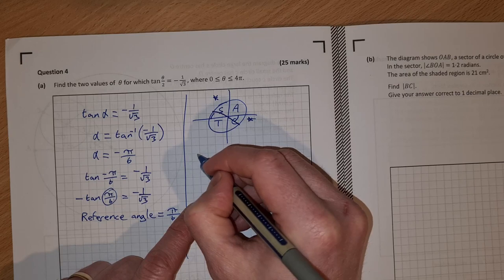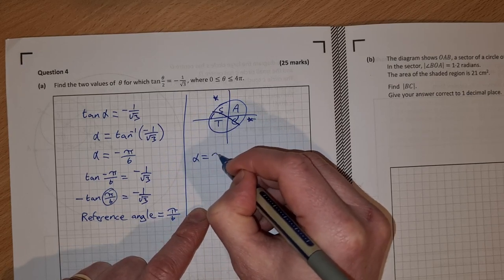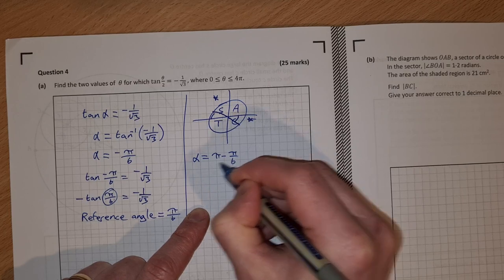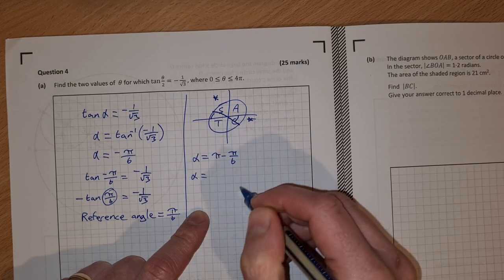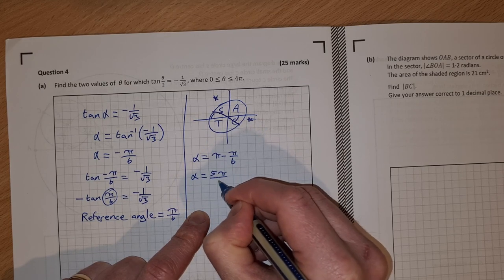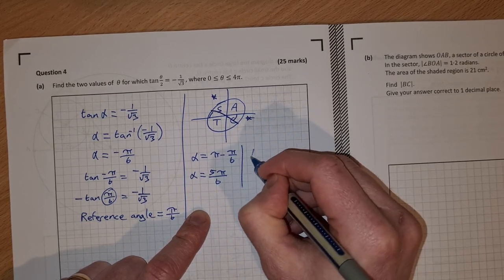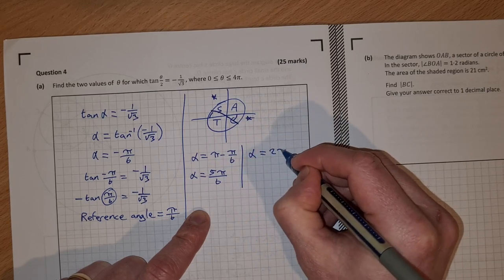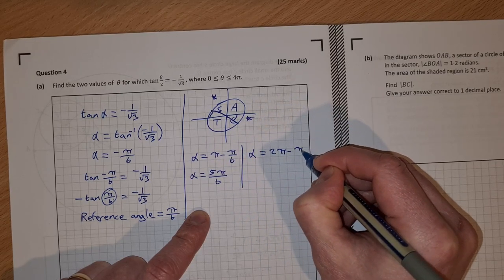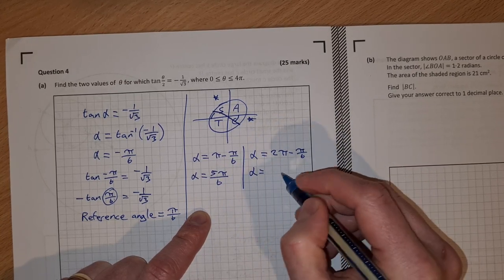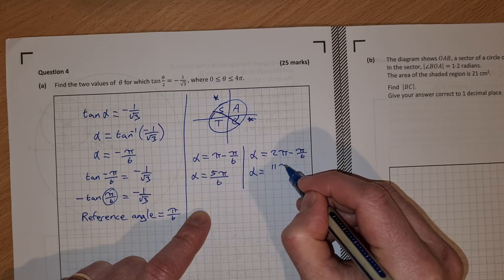So alpha is equal to pi minus pi over 6 is 5 pi over 6. And alpha is also going to be equal to 2 pi minus pi over 6 is 11 pi over 6.